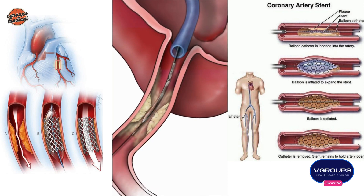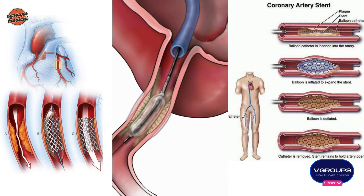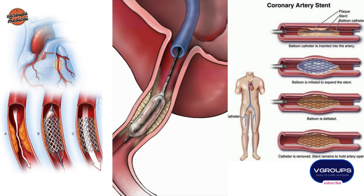A deflated balloon catheter is positioned in the blockage. The balloon is inflated, pushing against the plaque and opening the artery for more blood to flow. The balloon is then emptied and the catheter removed.